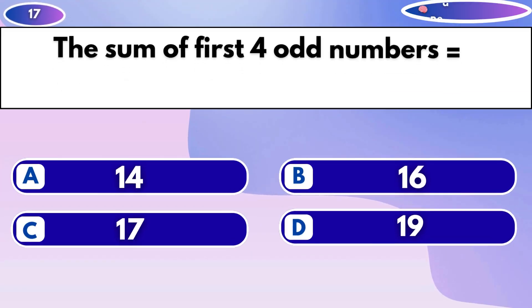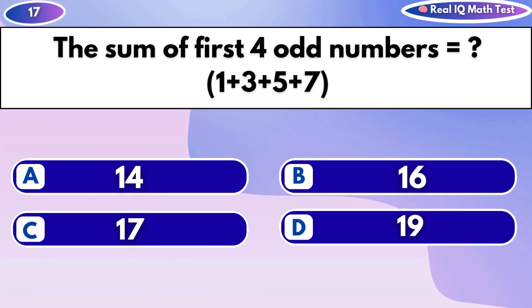The sum of first 4 odd numbers equals 1 plus 3 plus 5 plus 7.